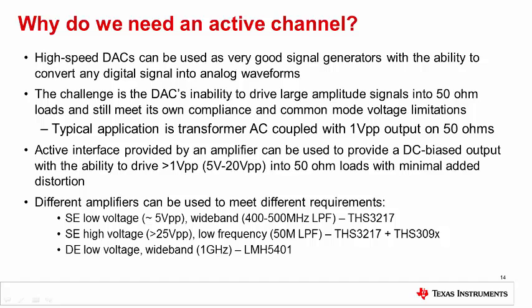The three paths available on this design include a path with just the THS3217, which will provide the highest bandwidth up to 500 MHz with signal amplitudes around 5 volts peak to peak. The second path adds the THS3091 to the output of the THS3217 to provide more drive strength to accommodate up to 25 volts peak to peak with about 50 MHz of signal bandwidth. The third path is a fully differential wideband path from DC up to 1 GHz using the LMH5401.